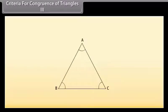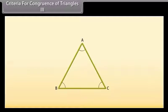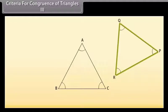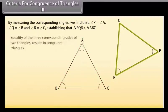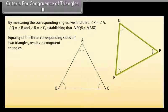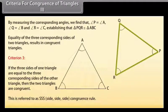In order to explore another criterion, we again take a triangle ABC. Now take three thin sticks equal in length to sides AB, BC and CA of triangle ABC. Place them in any order to form triangle PQR near the triangle ABC. By measuring the corresponding angles, we find that angle P is equal to angle A, angle Q is equal to angle B, and angle R is equal to angle C, establishing that triangle PQR is congruent to triangle ABC. This means that equality of the three corresponding sides of two triangles results in congruent triangles. Thus, Criterion 3: If the three sides of one triangle are equal to the three corresponding sides of the other triangle, then the two triangles are congruent. This is referred to as SSS — side-side-side congruence rule.